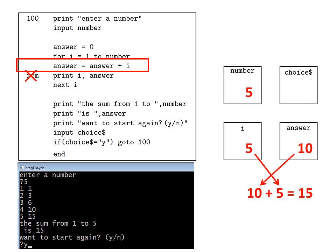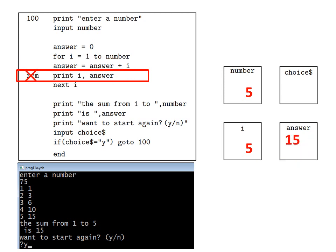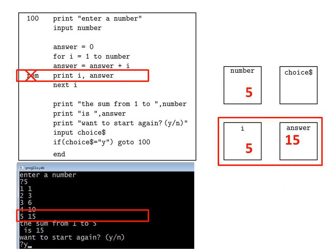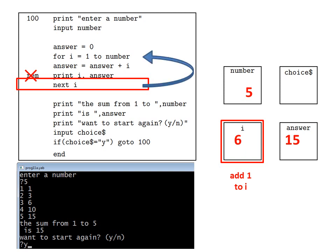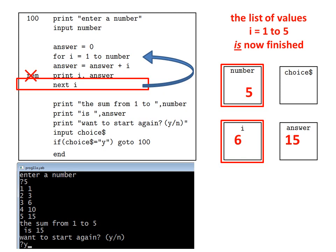Answer equals answer plus i, ten plus five is fifteen, and answer is updated to fifteen. Then print i answer displays on the black screen the current values of i and answer. Then next i increases the value of i by one to six. But now, when we check to see if we should jump back to the for i equals one to number line, number is five. Because i equals six now does exceed number equals five, the list of values one to five is now finished. So the computer does not jump back this time.